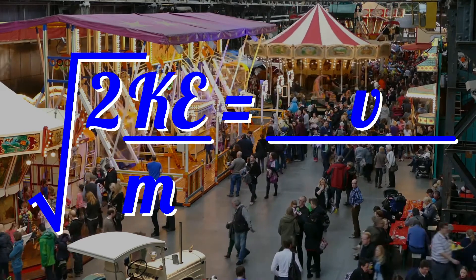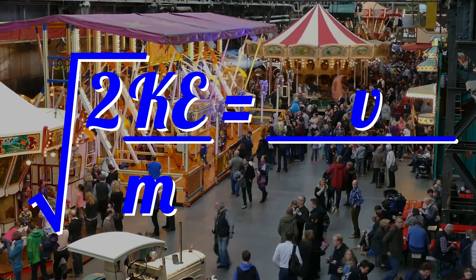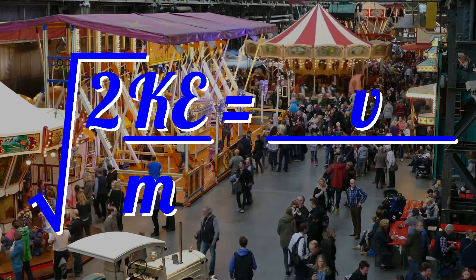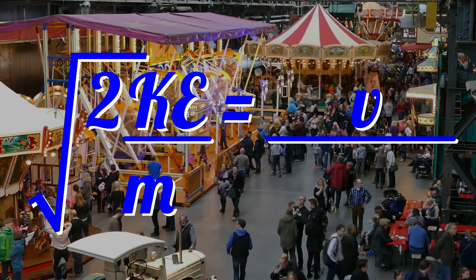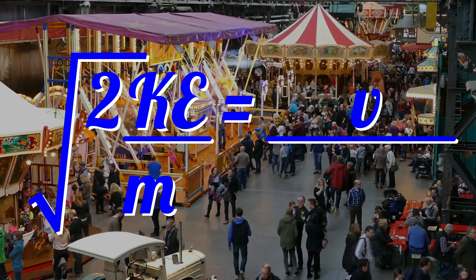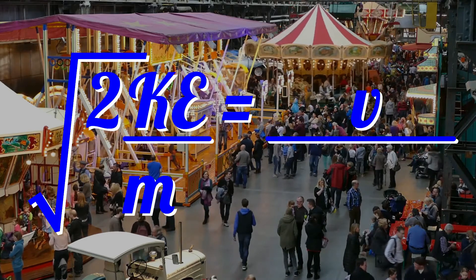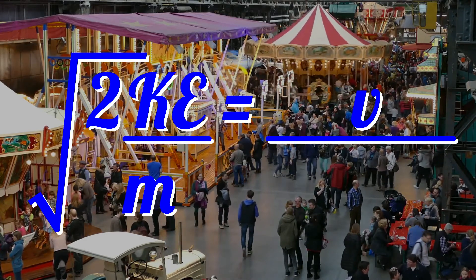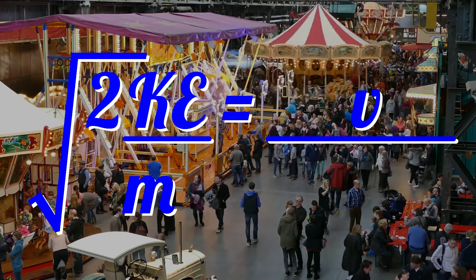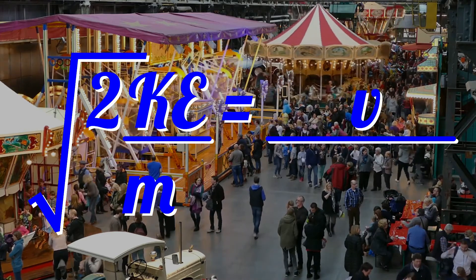The square root of 2KE over m equals v. The square root of 2 times the kinetic energy, divided by the mass, equals velocity. This is one of the most complicated rearrangements you might need to do in GCSE and IGCSE physics, so make sure you practice it to get really comfortable with it.